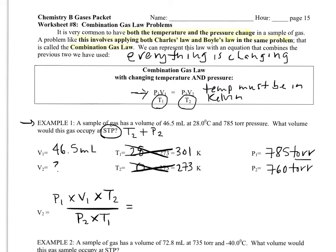Alright. So I'm going to plug this in, and notice I'm going to put parentheses around the top numbers. This is the equation where order of operations sometimes gets problematic depending on what type of calculator you have. So we're going to do 785 times 46.5 times our T2, careful there, which is 273. And then on the bottom, I will divide. My P2 is 760 times my T1, which is 301.